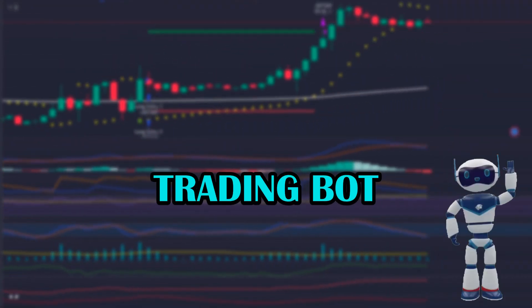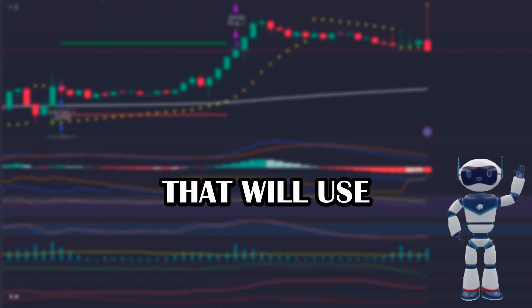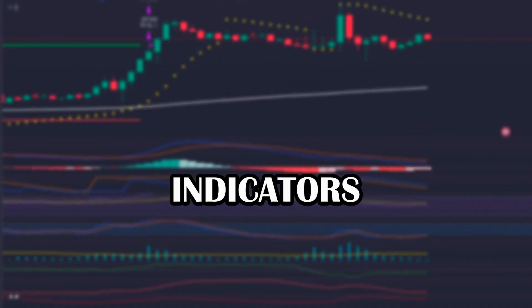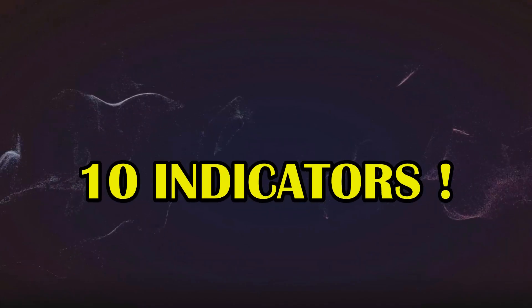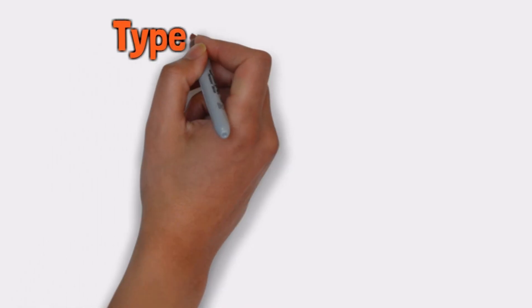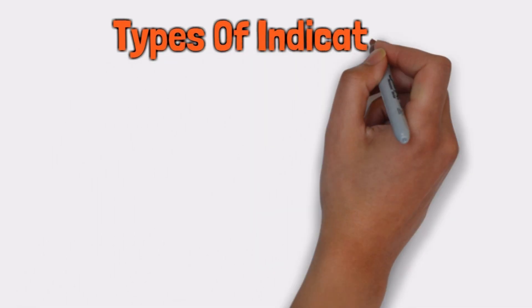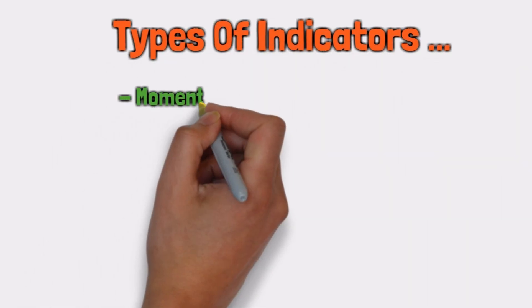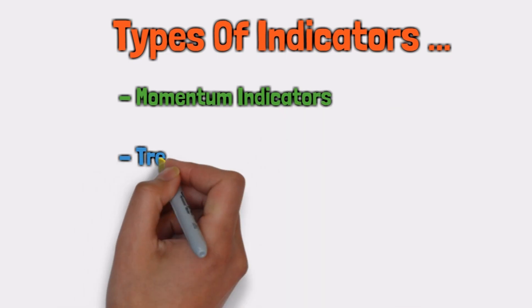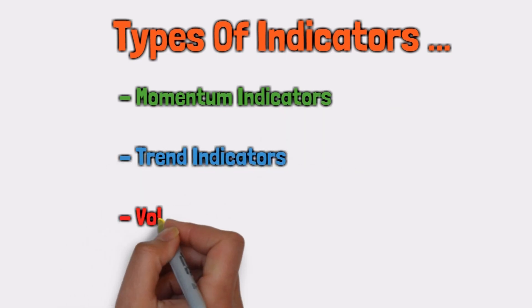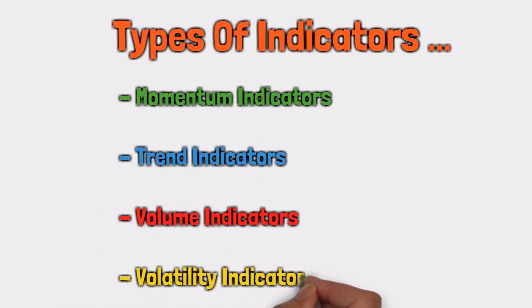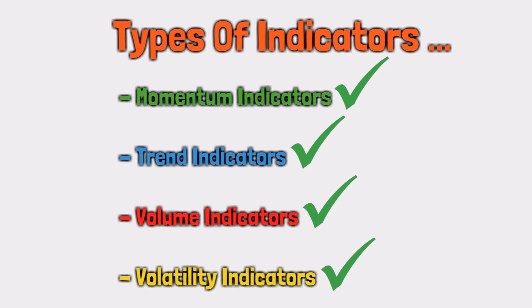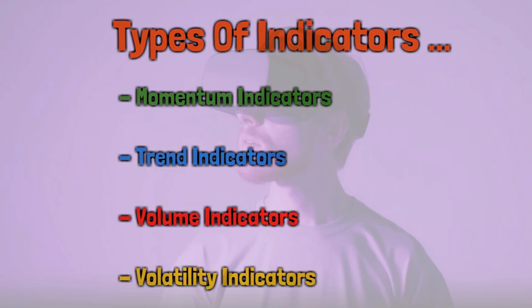I will create a trading bot that will use 10 different indicators to make trading decisions. Yes, you heard right — 10 indicators. There are 4 major types of indicators: Momentum, Trend, Volume, and Volatility indicators. And my bot will have access to all these types.